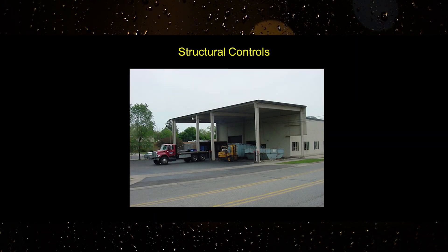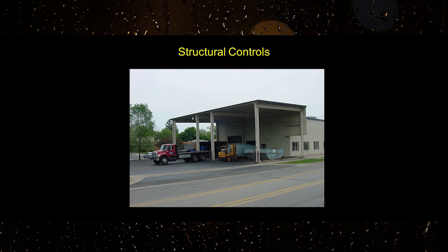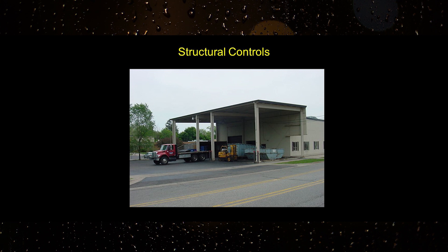Structural control measures are necessary when non-structural controls are not adequate to prevent contamination of stormwater. Structural controls are physical features that control and prevent stormwater pollution.